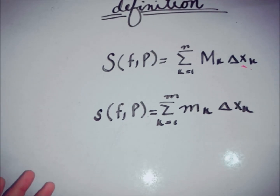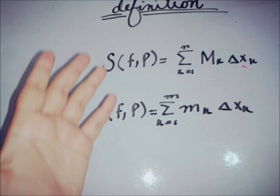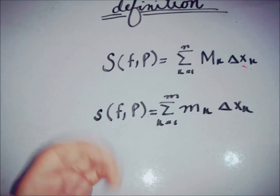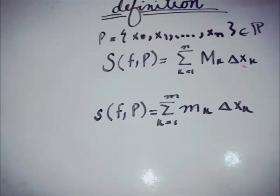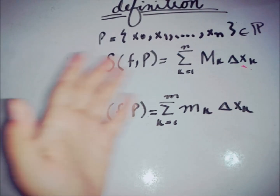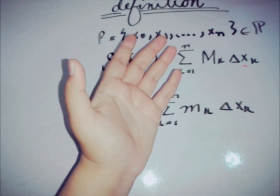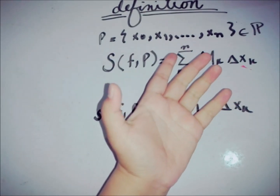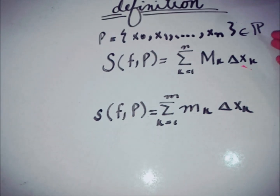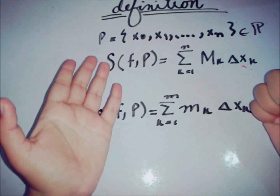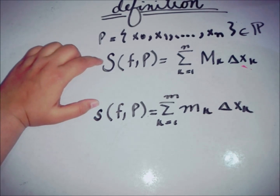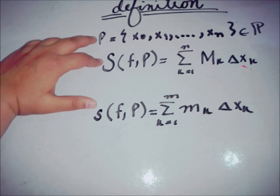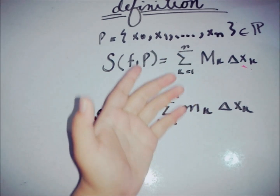Now we are able to define what is meant by the Riemann upper integral and Riemann lower integral using the definitions of the Riemann upper sum and lower sum. The partition P is taken from a set of all partitions, going from X0 equals A to Xn equals B. The upper sum and lower sum each correspond to a single partition P.